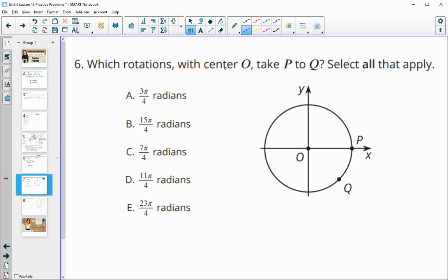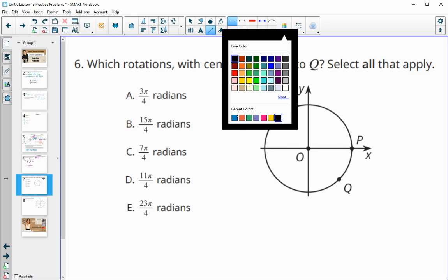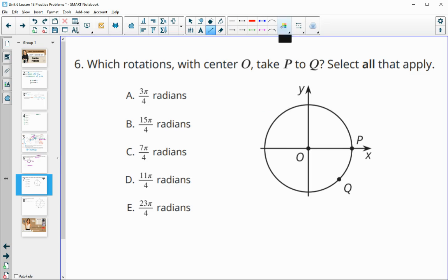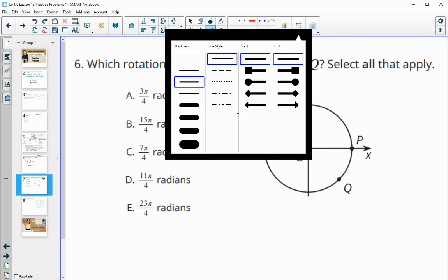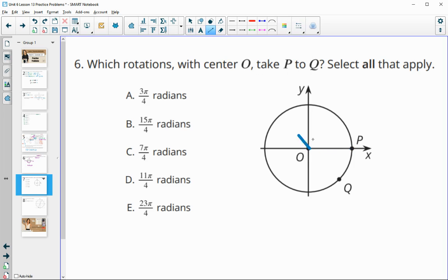Number 6, which rotations with center O take P to Q? Remember, you can rotate this as many times as you want, and we're going to go counterclockwise, which is the way that our angles go when they're positive. So if we're taking a look at A, it's 3 pi over 4. So here's 1 pi over 4, 2 pi over 4, here's 3 pi over 4. So this one would not get us there.